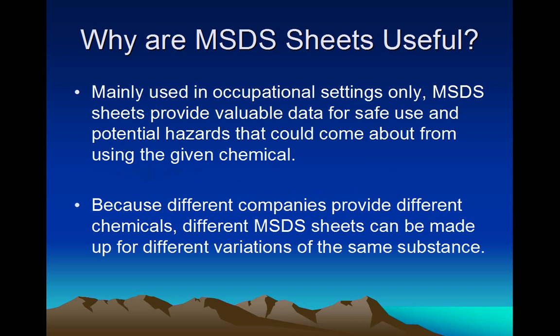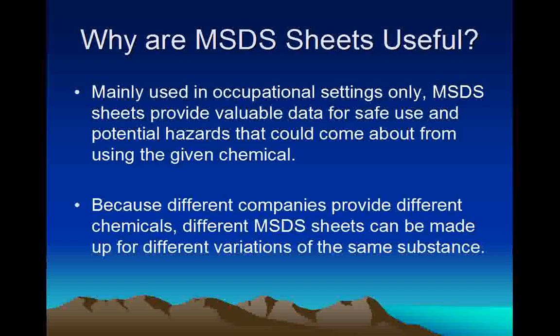So why are MSDS Sheets useful? They're mainly used in occupational settings only — they're not really used in personal settings — but MSDS Sheets provide valuable data for safe use and potential hazards that could come about from using a given chemical. Because different companies provide different chemicals, different MSDS Sheets can be made up for different variations of the same substance. Two soaps that are almost identical, one being the name brand product and one being a generic product, could have completely different MSDS Sheets based on how they were produced, and just one little difference could change the reactivity of the entire chemical.